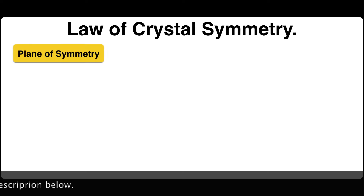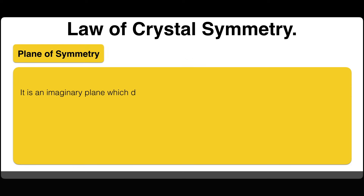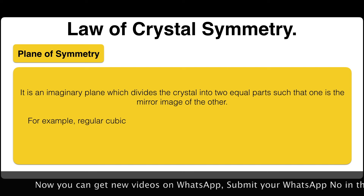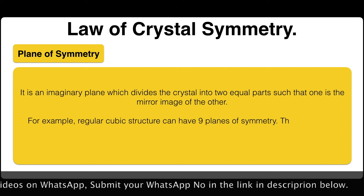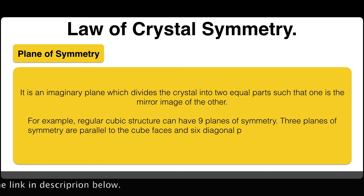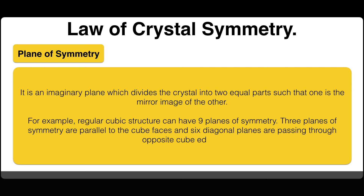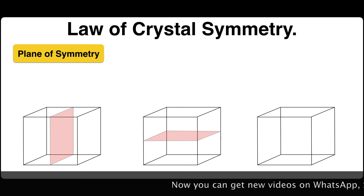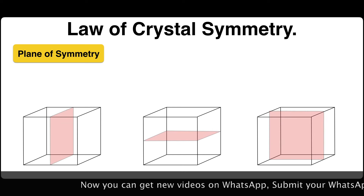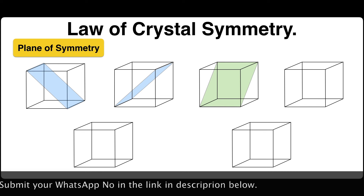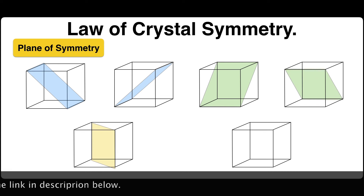Plane of symmetry is an imaginary plane which divides the crystal into two equal parts such that one is the mirror image of the other. For example, a regular cubic structure can have nine planes of symmetry: three planes of symmetry parallel to the cube faces, and six diagonal planes passing through opposite cubic edges.